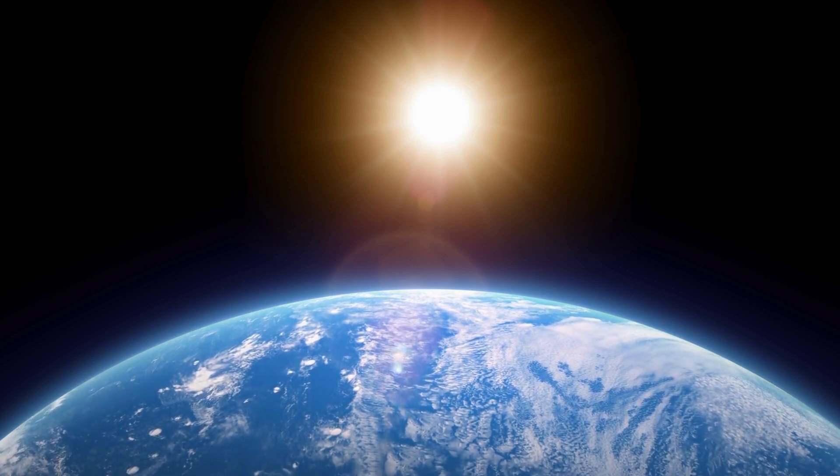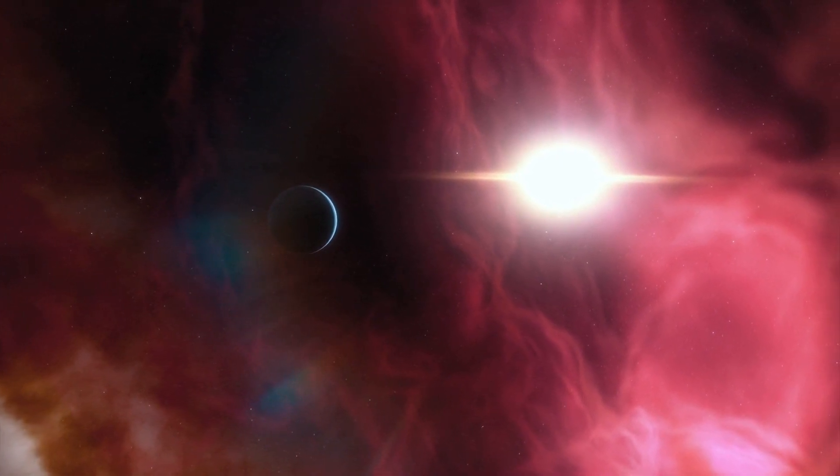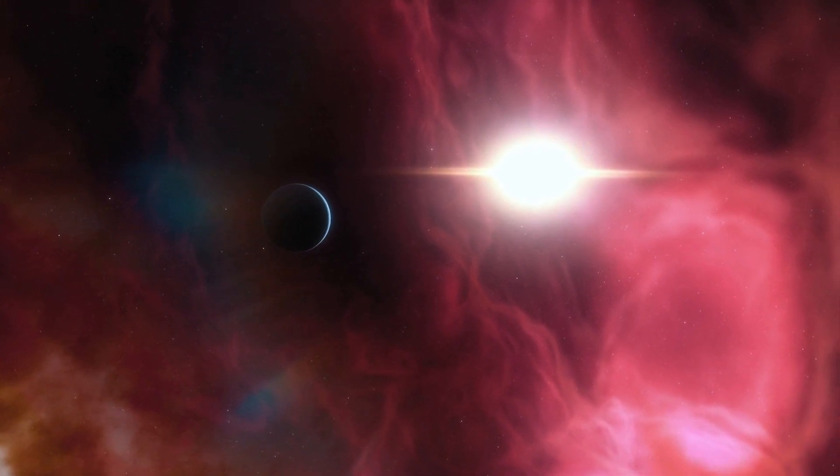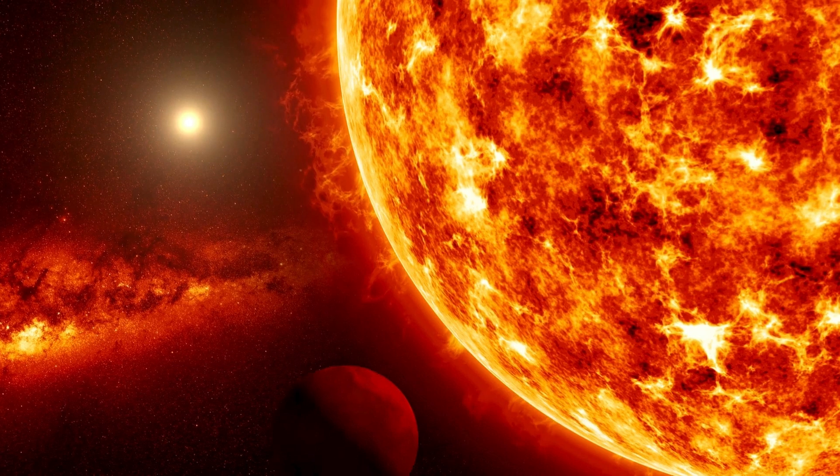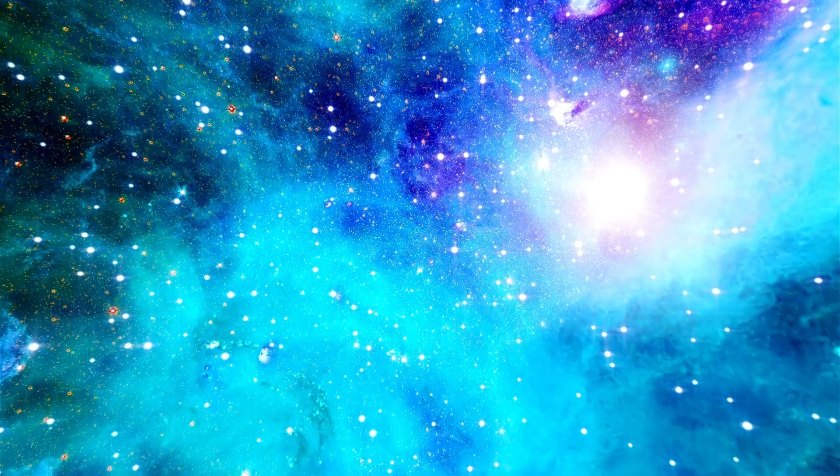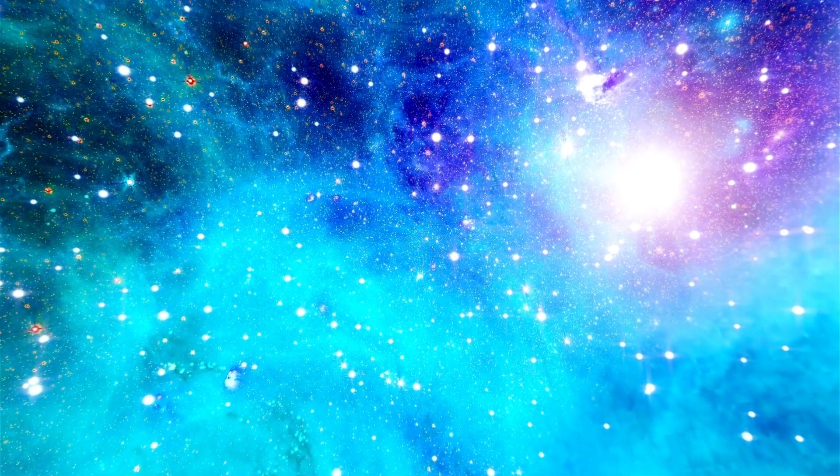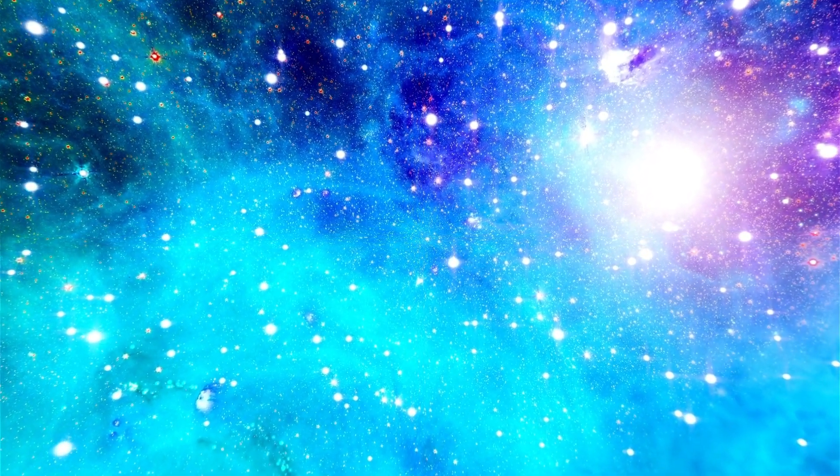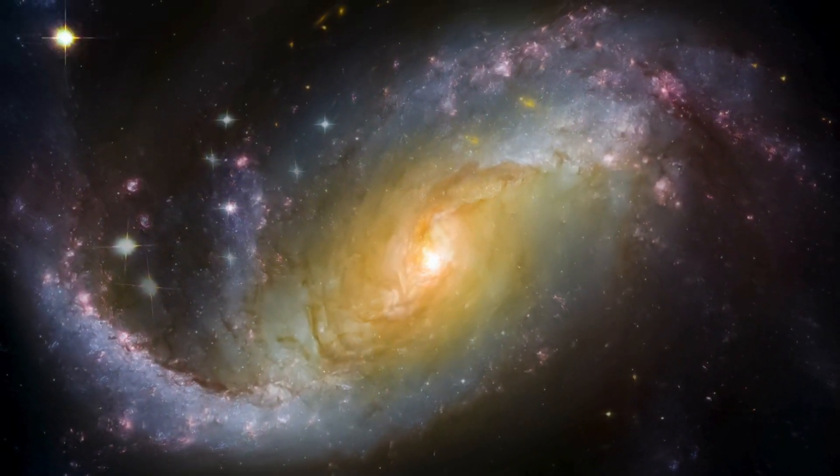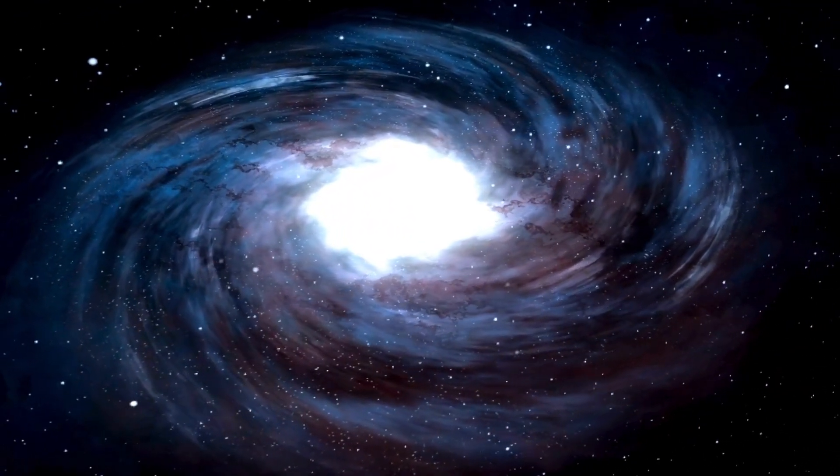Now, let's take a closer look at Proxima Centauri, the star that Proxima b orbits. Proxima Centauri is part of the Alpha Centauri triple star system, including Alpha Centauri A and B, two G and K-type stars that appear as one in the Centaurus constellation, forming the third brightest stars in our night sky. Proxima Centauri, also known as Alpha Centauri C, is a red dwarf or M-type star located 4.24 light-years from its two stellar companions, making it the closest star to our solar system. Its name, Proxima Centauri, means nearest star of the Centaurus in Latin, a fitting designation for a star discovered in 1915 by Scottish astronomer Robert Thorburn.